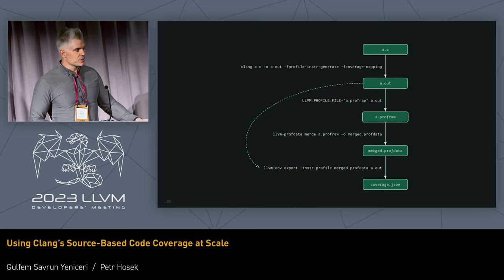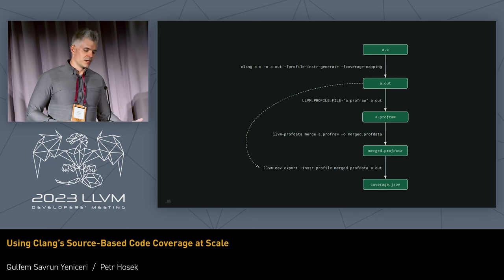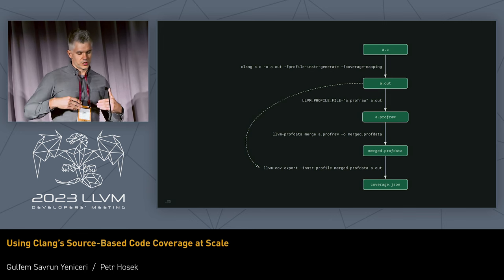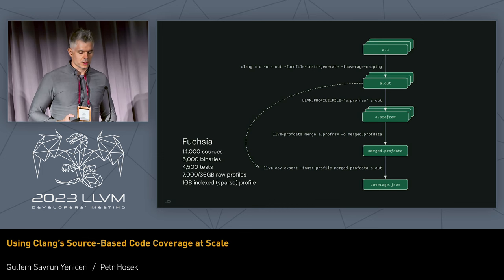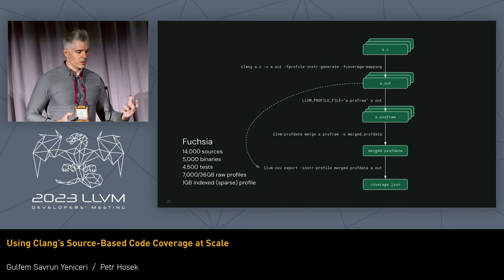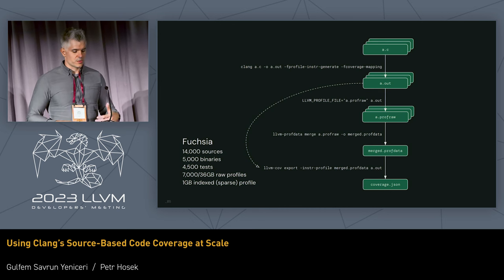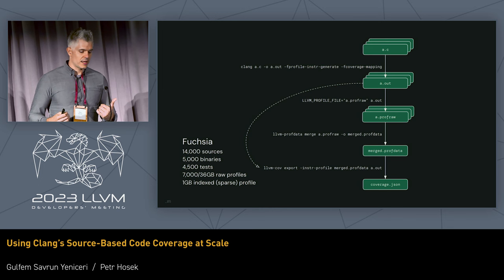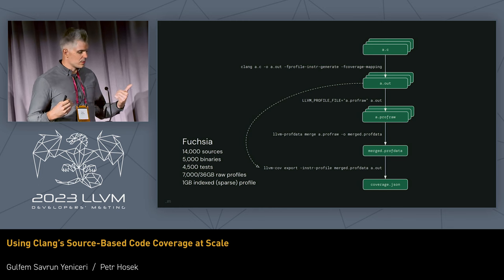If this is what you're using — a single source file — it's all fine, as shown in the documentation examples. The problem arises when you have more than one source file, more than one binary, and you start using this at scale. In Fuchsia, we have about 14,000 sources, from which we produce about 5,000 binaries, of which 4,500 are tests. Running all these tests produces about 7,000 raw profiles totaling around 36 gigabytes. When we index all those profiles, we generate a single sparsified profile of one gigabyte.